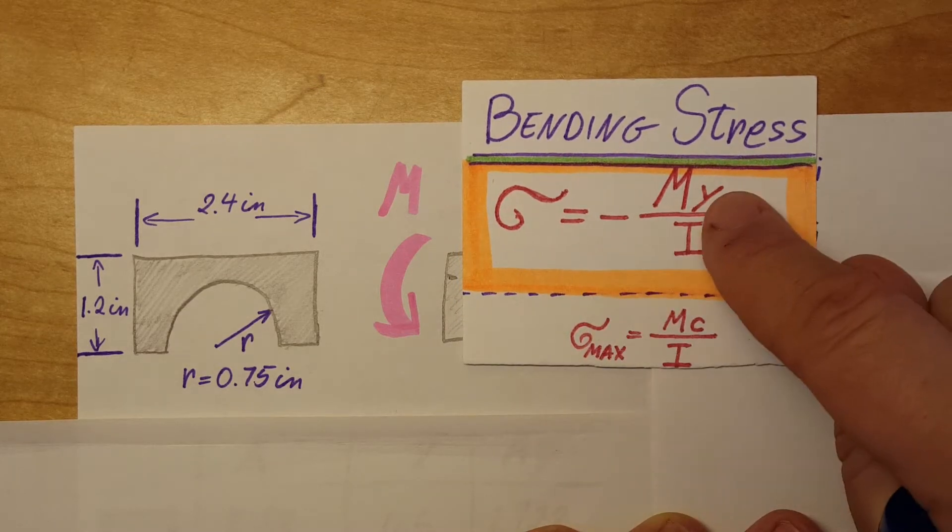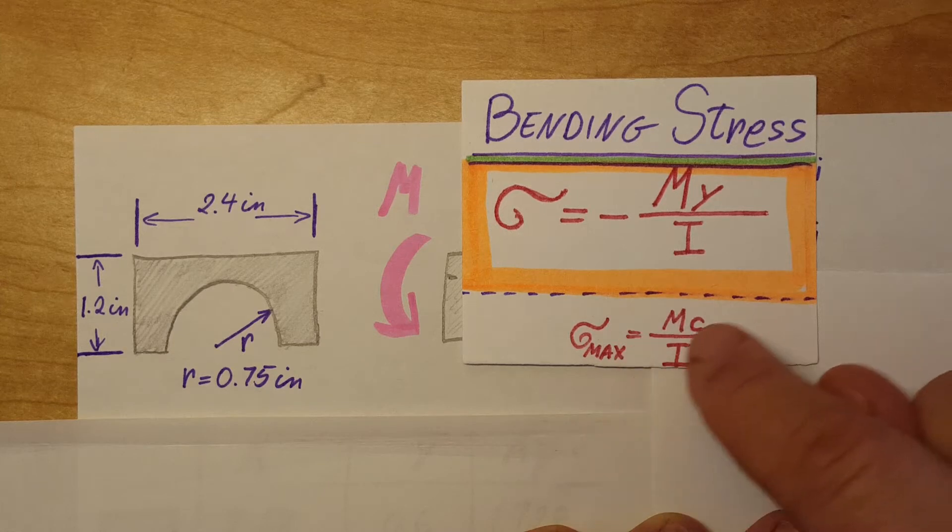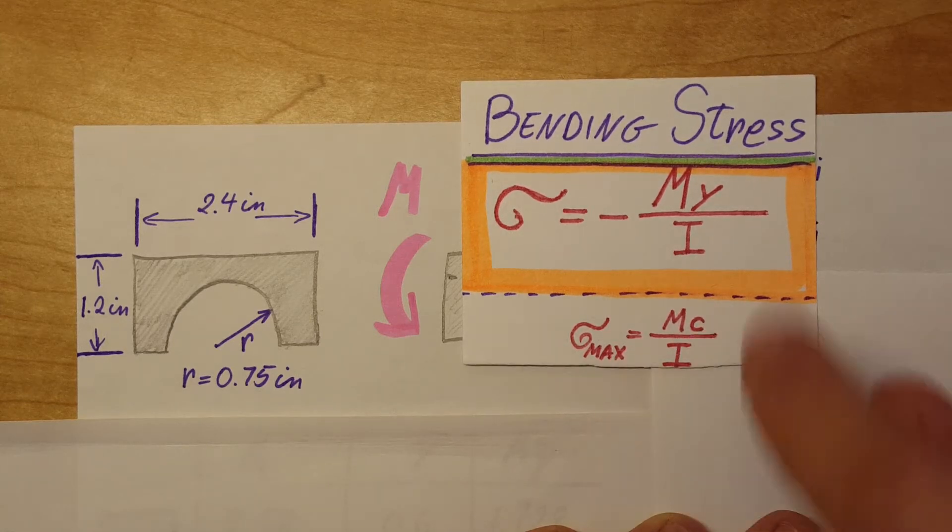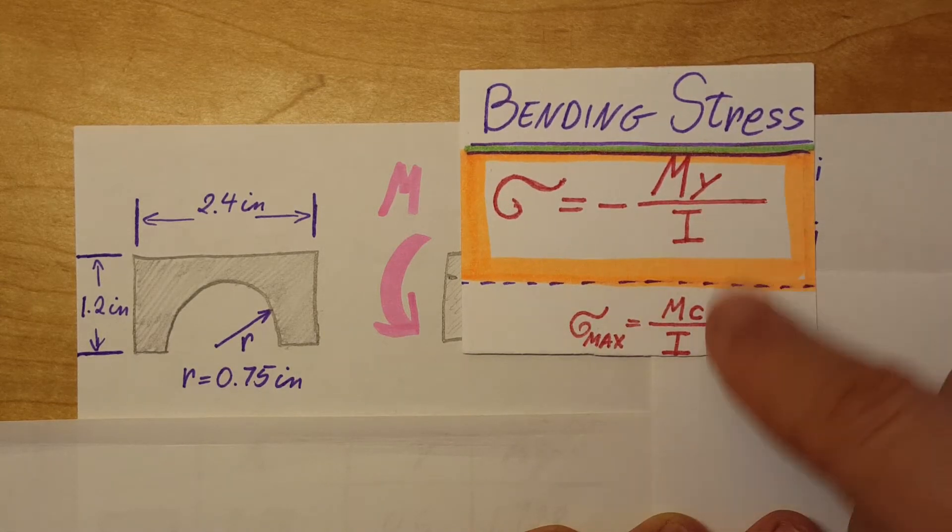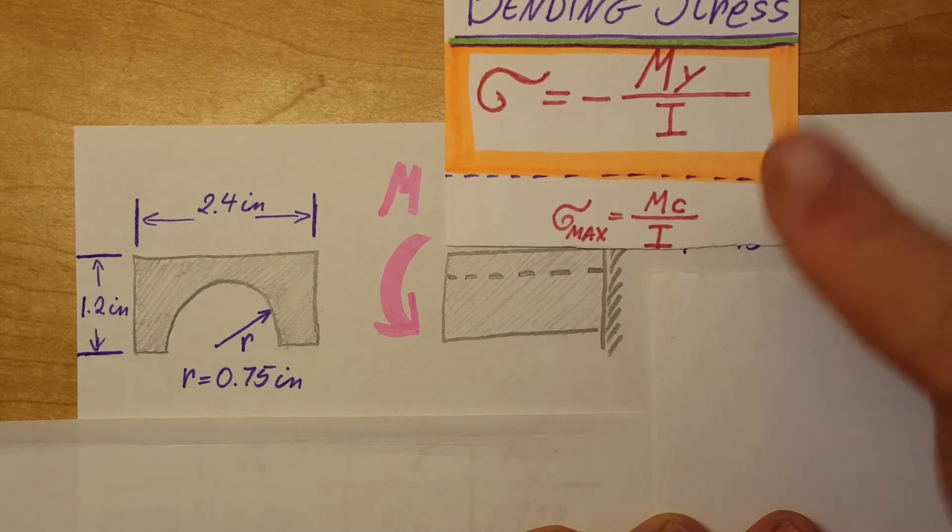We don't need the negative in the Y. We're just going to use it as a positive and go straight for the C. The Y maximum is equal to C so we don't have to worry about that.